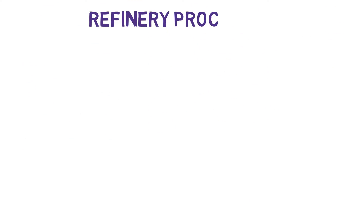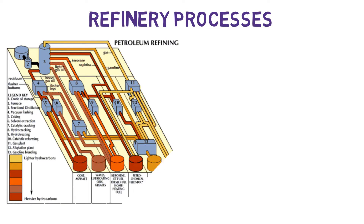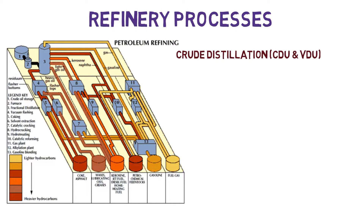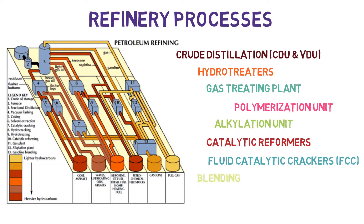Afterwards, we continue with the most interesting part of the course: the refinery processes. What are the crude distillations, hydrotreatment, gas treating plants, polymerization unit, alkylation, catalytic reformers, fluid catalytic crackers, blending pools, and residual treatment for coking, asphalts, and other units?